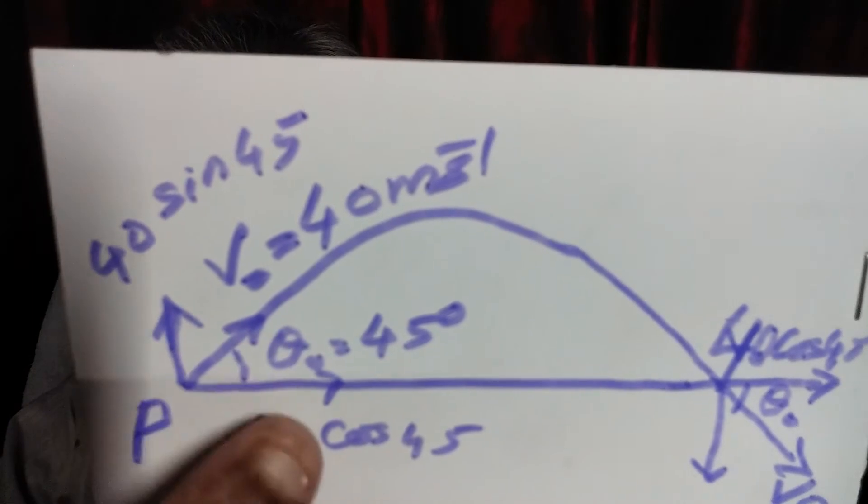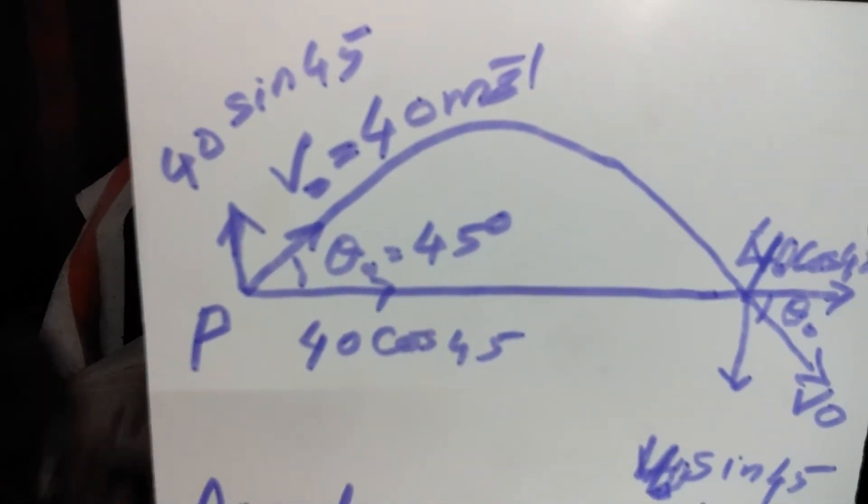If theta is 45 degrees, the maximum range is v0 square by g. 40 square by g. This perpendicular momentum multiplied by range gives us angular momentum.